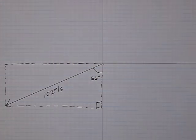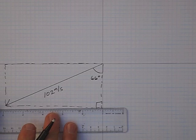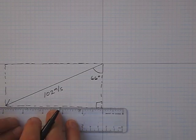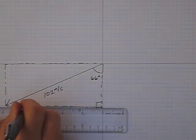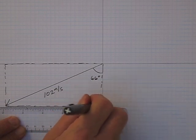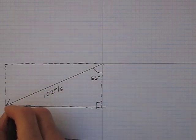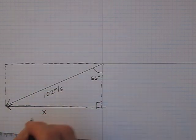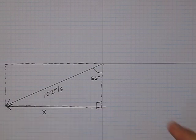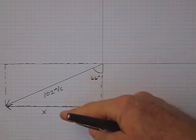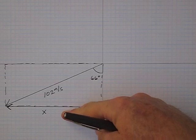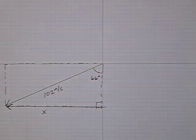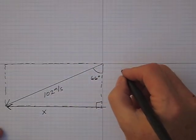Let's find the x component of the right triangle. So I'm going to draw a side here on the triangle and label that x. And as you can see, we know the angle here is 66 degrees. We're looking for the opposite side of the triangle and we know the hypotenuse is 102 meters per second.